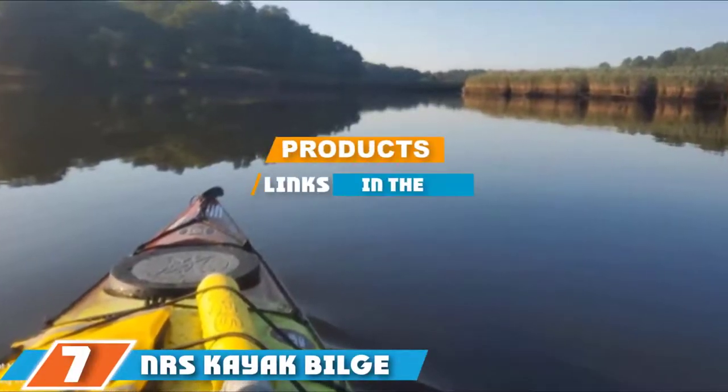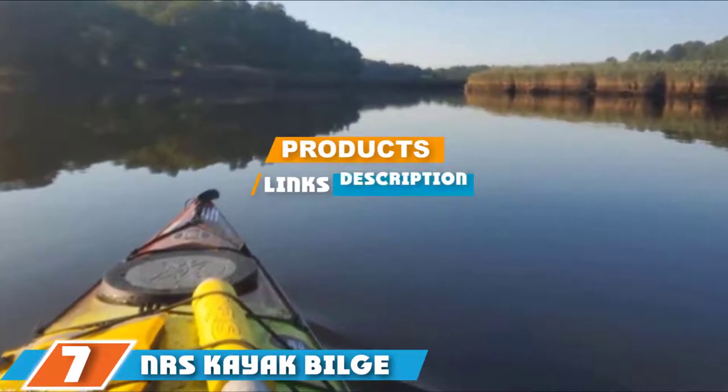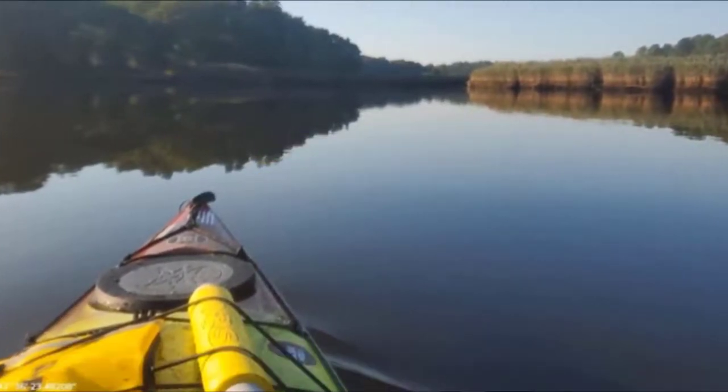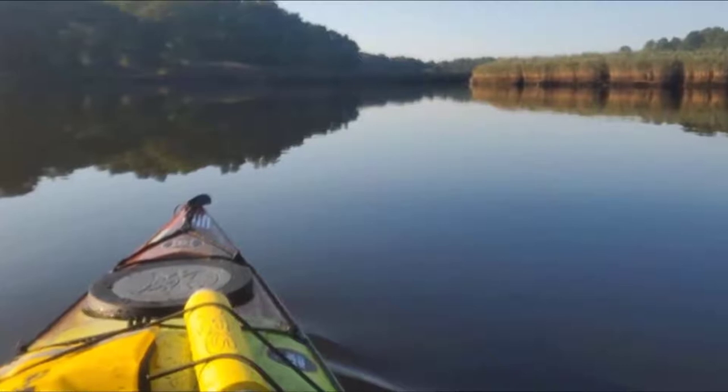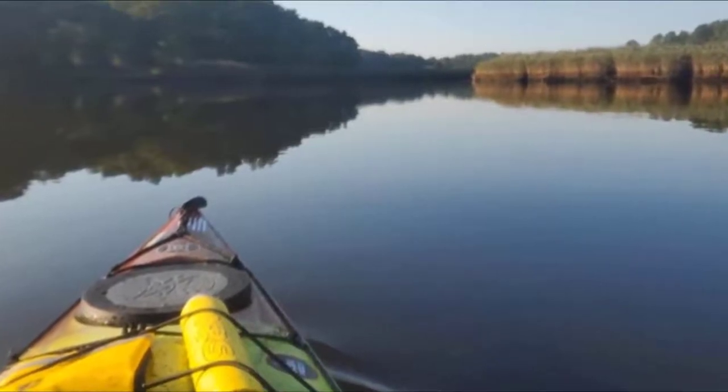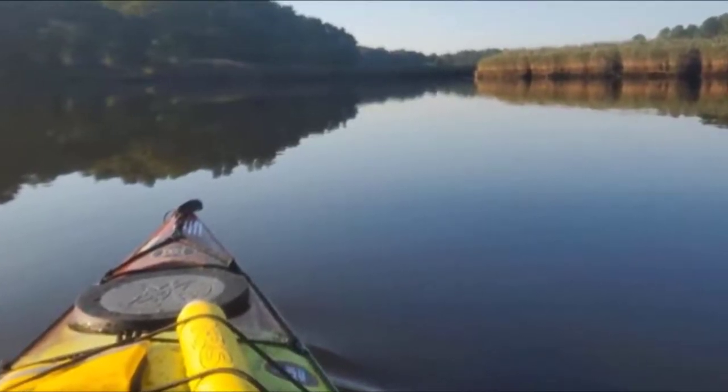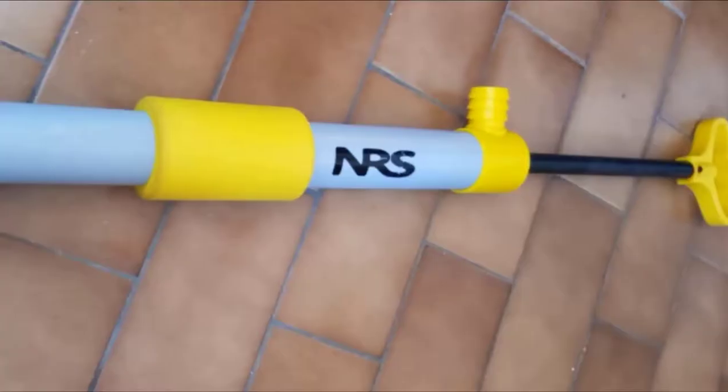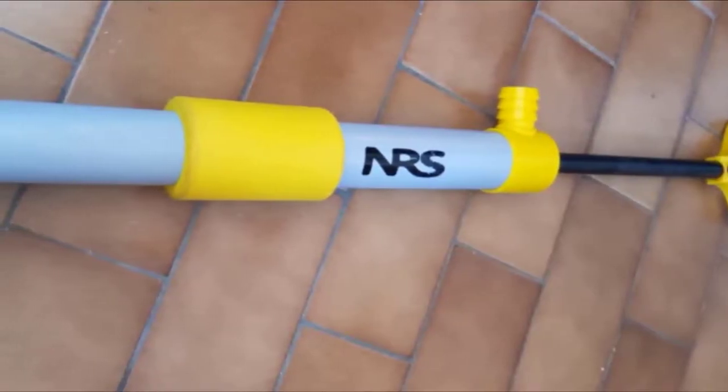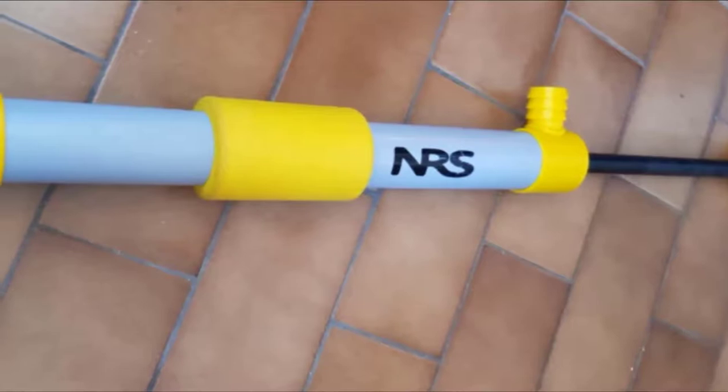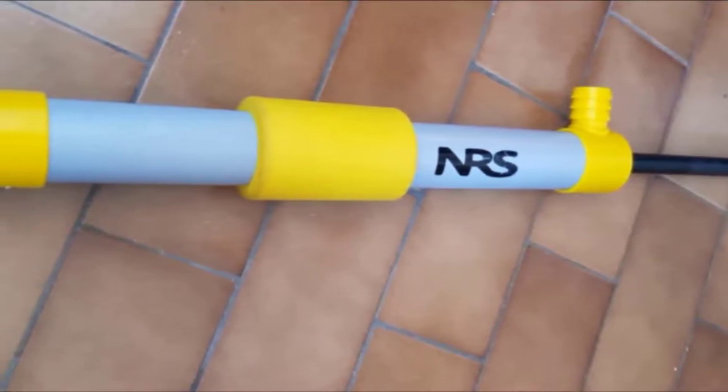At the seventh position of our list, we have NRS Kayak Bilge Pump. This NRS bilge pump is a manual pump that can be ideal for all types of kayaks and canoes. It is 21 inches long and can remove up to 8 gallons of water per minute from your vessel. This makes it a good choice if you need to empty water quickly. It is bright yellow to make it easier to spot in low light or if you drop it overboard. It also benefits from a full-length foam cover which will help keep it afloat.